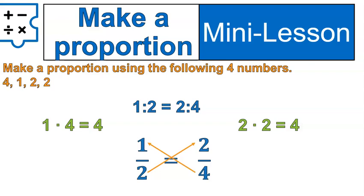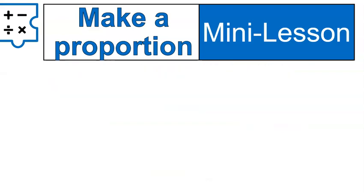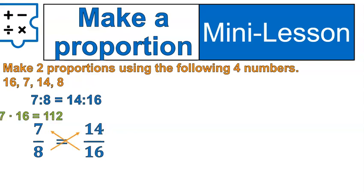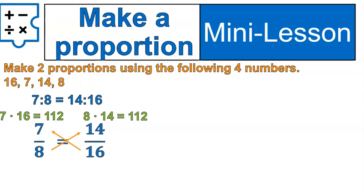Now the trick to this is there's not just one proportion that can be made for every set of four numbers. So I'm going to show you an example where I actually make a couple of them. So this one asks me to make two proportions from the following four numbers. Let's take a look. Well, I've got the numbers 16, 7, 14, and 8. So I'm going to set it up as 7 to 8 is equal to 14 to 16. I'll check using cross multiplying. Let's see, 7 times 16 and 8 times 14. They're both equal to 112. Because they're both equal to 112, they are proportional. So I have successfully written a proportion.